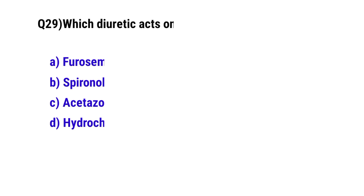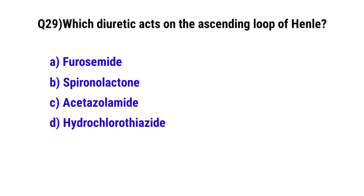Question number 29: Which diuretic acts on the ascending loop of Henle? The correct option is A: furosemide.